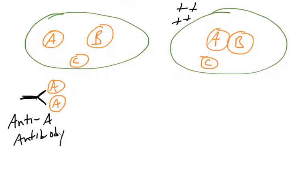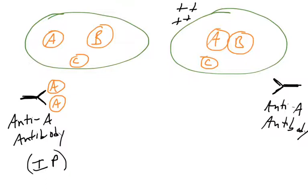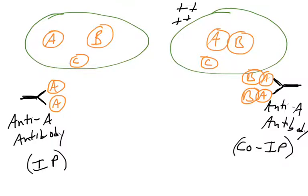Here is an antibody that binds the A protein, and you can use it to go fishing for protein A and whoever tagged along with it. If you're just using an antibody to pull down a protein, you're doing an immunoprecipitation. On the cell on the right, if you went fishing for protein A under the right conditions where you're preserving protein-protein interactions, protein B would come along for the ride — co-immunoprecipitated with protein A. So both protein A and B would be captured in this fishing experiment.